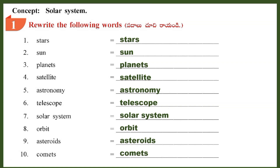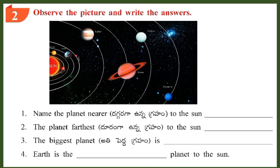Section 2: Observe the picture and write the answers. Question 1: Name the planet nearer to the sun. Answer: Mercury.